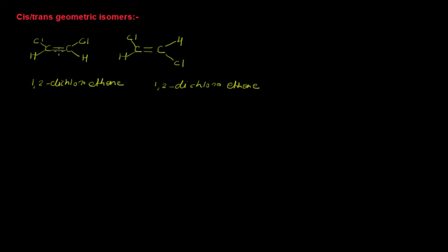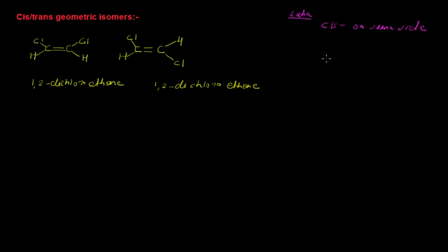With respect to the carbon-carbon double bond, in the first structure, the chlorines are present on one side. The meaning of cis in Latin — cis means 'on the same side.' When both chlorines are on the same side, we can write this compound as cis-1,2-dichloroethene.